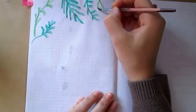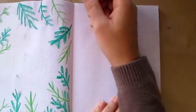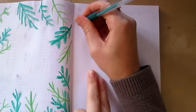As you can see, I used different shades of green to draw the leaves. And then I used a gel pen, always green, to write my calendar.